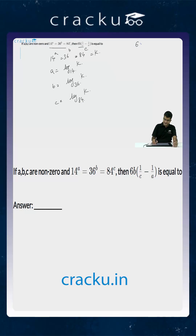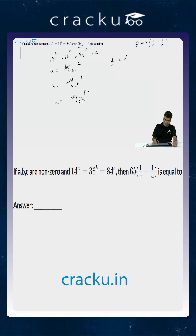We are asked to find out the value of 6 times B times (1/C minus 1/A). What is the value of 1/C? Since C is equal to log K to the base 84, then 1/C will be equal to log of 84 to the base K. Similarly, 1/A will become equal to log of 14 to the base K.